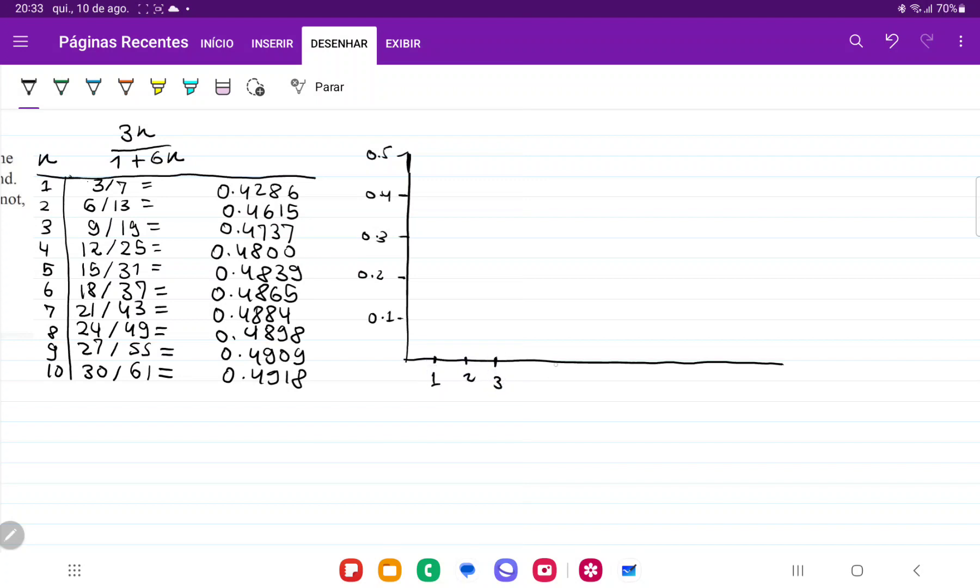And then we're going to have 1, 2, 3, 4, 5, 6, 7, 8, 9, 10. So on this axis we have our value of n, and over here we have the an, the value when we plug in n.